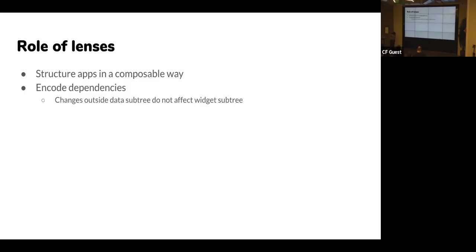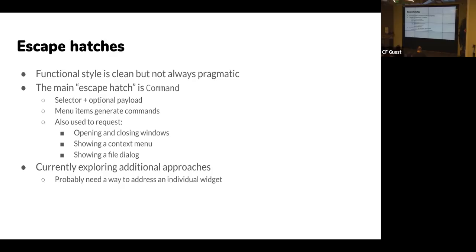The lenses are basically a guarantee: any change to the data outside that subtree isn't going to affect what goes on in that subtree. We're discovering as we go that not every piece of interaction fits nicely into this functional programming-style declarative pipeline — you need other ways of making things happen. The main thing we have right now is Commands. A command is a selector plus an optional payload — similar to Cocoa programming. Commands are used for menus, opening and closing windows, right-click context menus, file dialogues with results delivered as commands.